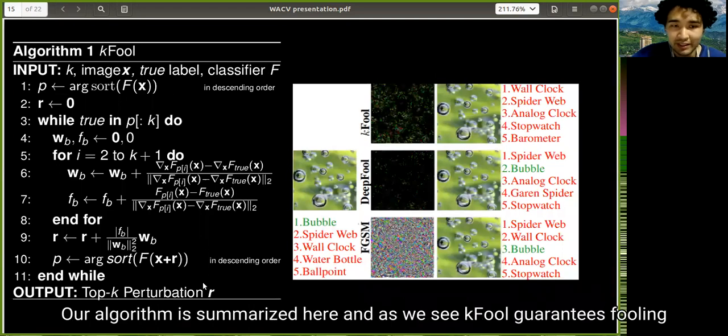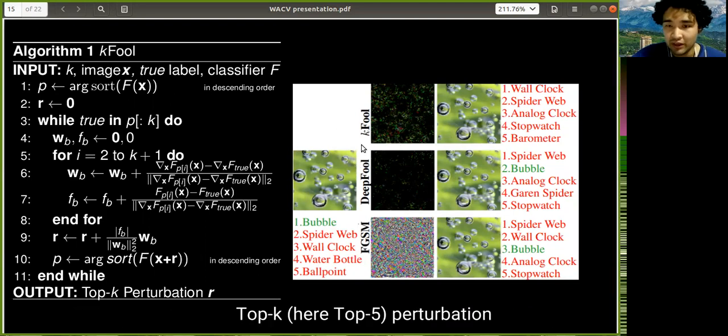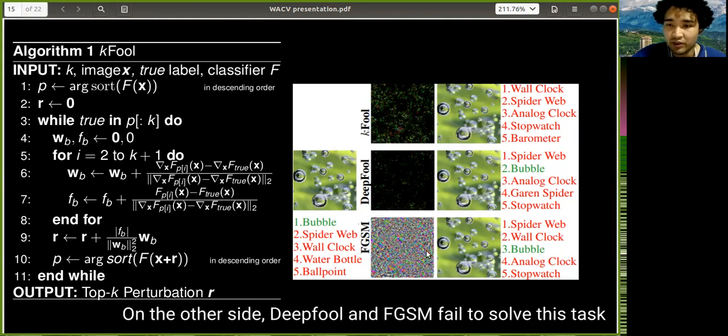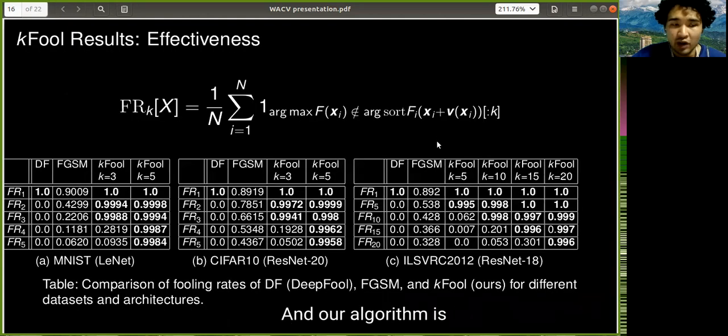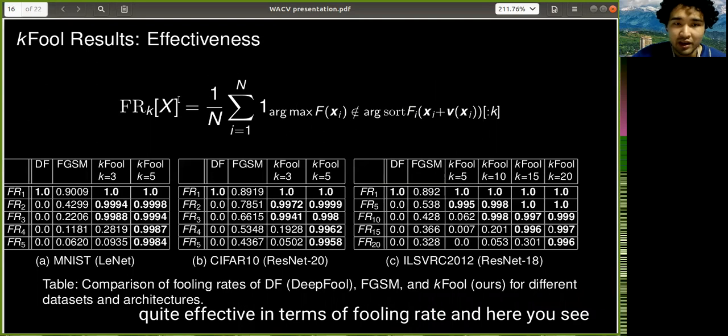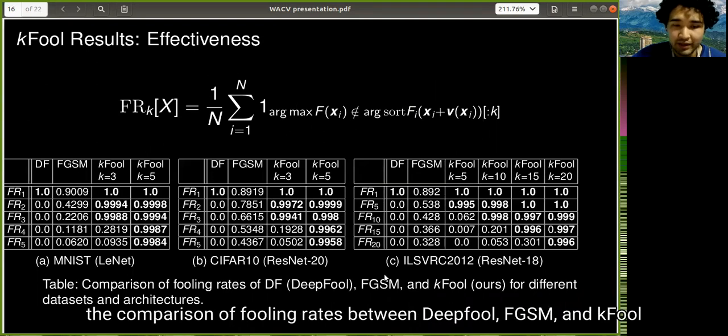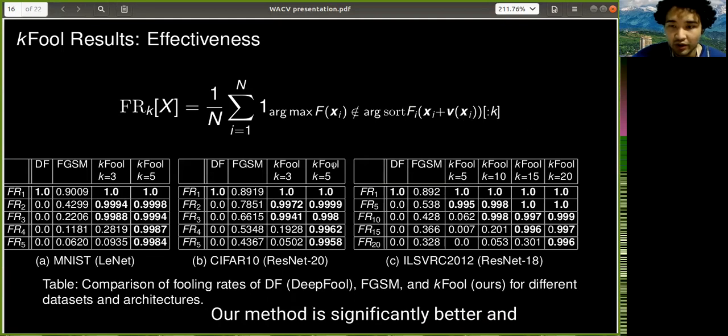So our algorithm is summarized here. And as we see, K-Fool guarantees fooling the top-k for top-five perturbation. On the other side, DeepFool and FGSM fail to solve this task. And our algorithm is quite effective in terms of the fooling rate. Here you see the comparison of fooling rates between DeepFool, FGSM, and K-Fool. Our method is significantly better.